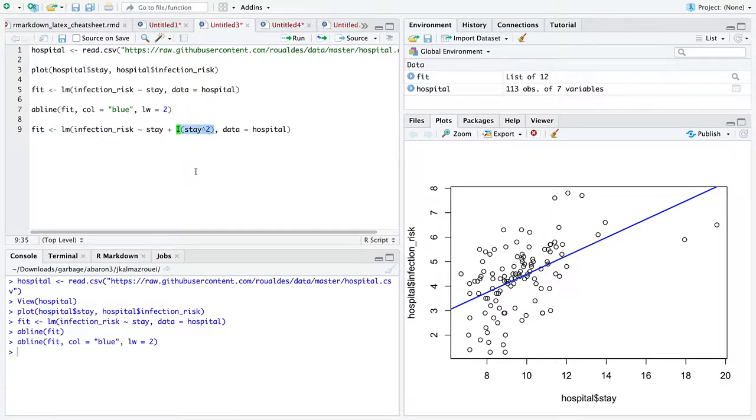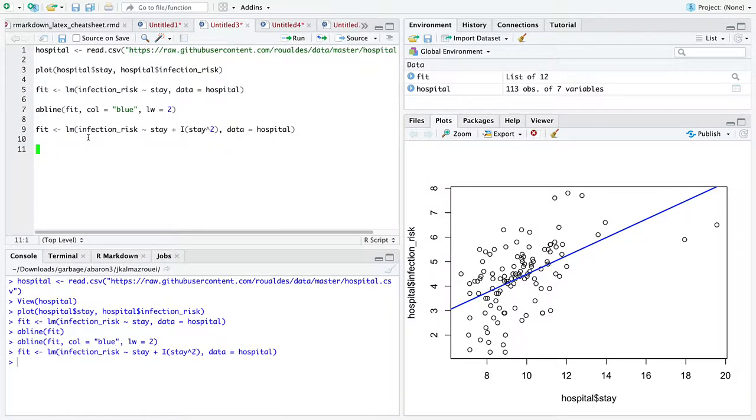But I am taking into account stay to the second power, which is going to give us some curvature to the line through these data. Now, as you can see, there is some kind of curvature through these data. But this is still in the world of linear regression. So fitting the model goes just fine, as you can see.